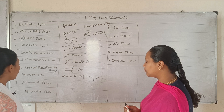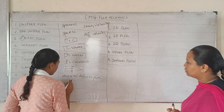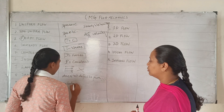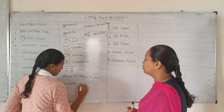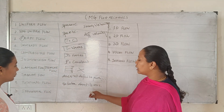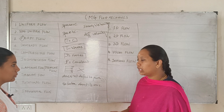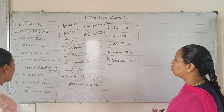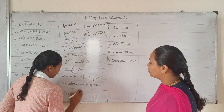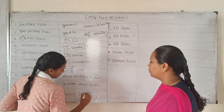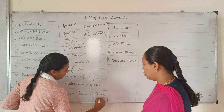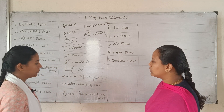Rotational flow — the fluid particles rotate about their own axis of rotation. Irrotational flow is the opposite of rotational flow.